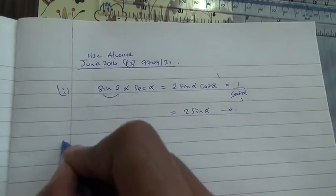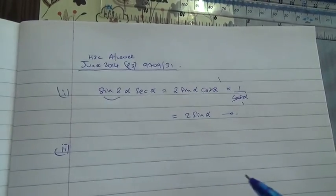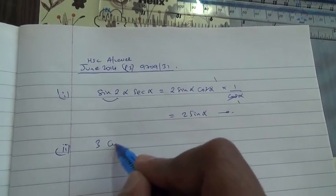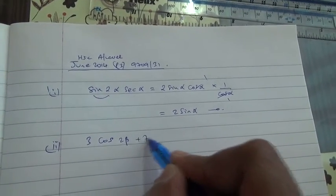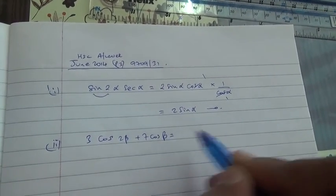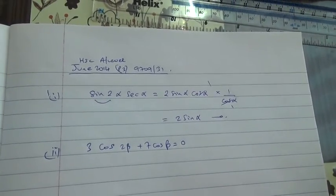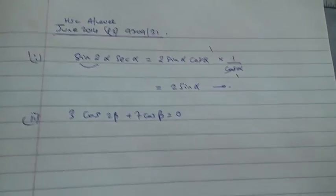Alright, and the second part is we need to solve the equation 3 cos 2 beta plus 7 cos beta is equal to 0. Alright, so let's do it.